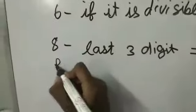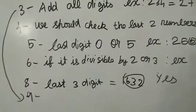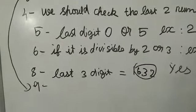For 9, same like 3, we should add all digits and check if it is coming in 9 table.